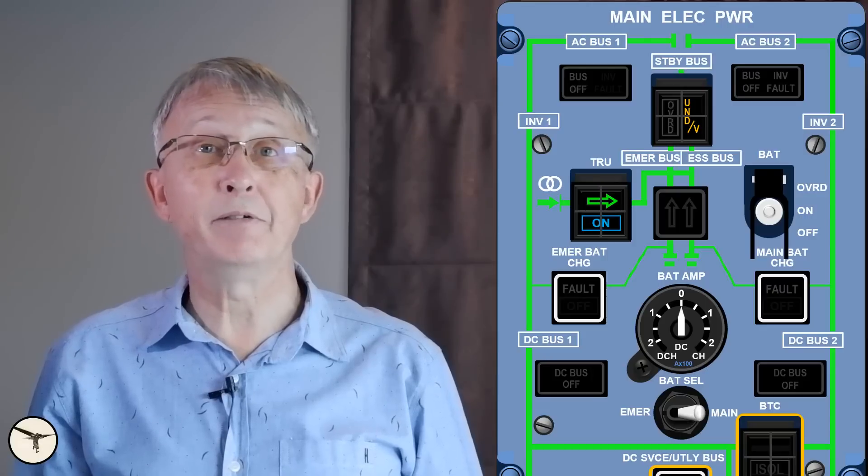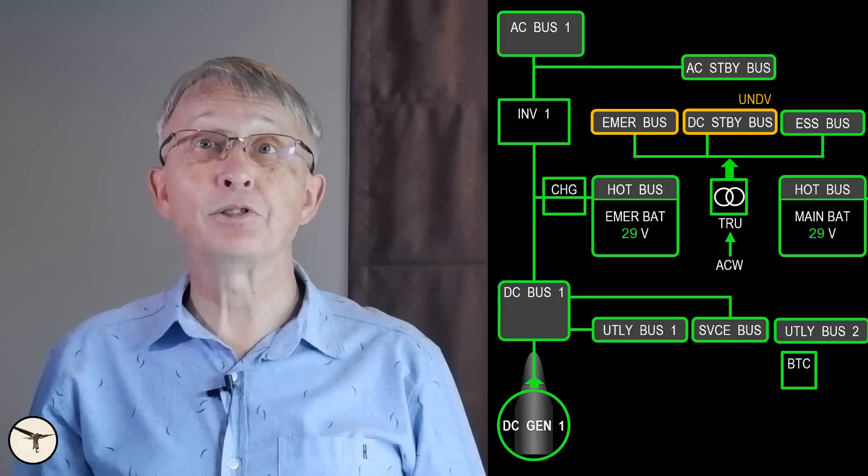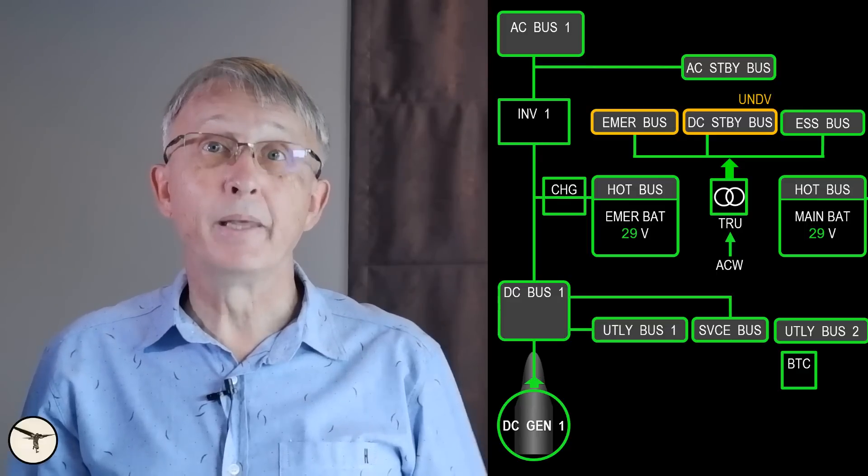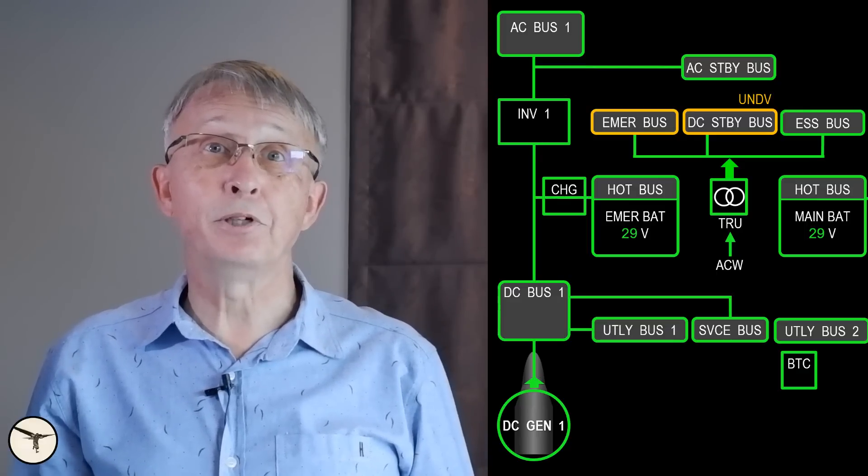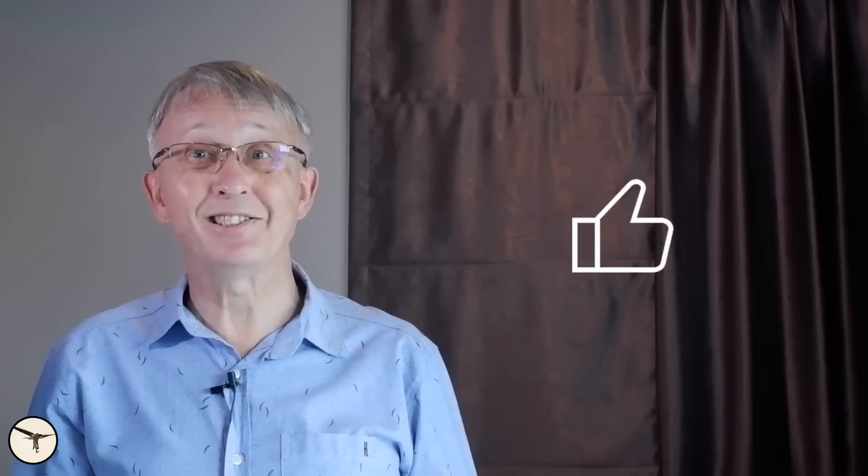And the overhead panel may give a clue. The electrical system page is even better. And the failed systems will confirm the bus failure. Maybe one more bus has failed. Well, then it becomes more interesting, as the crew of Emerald Airlines discovered.